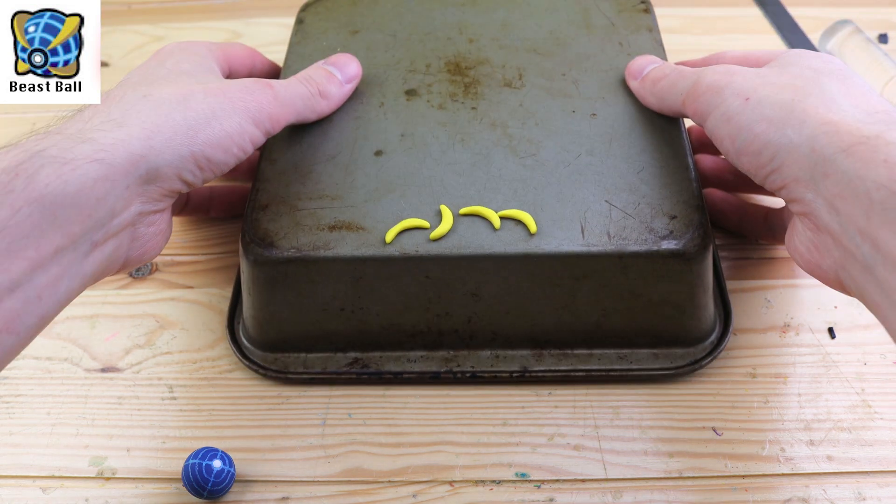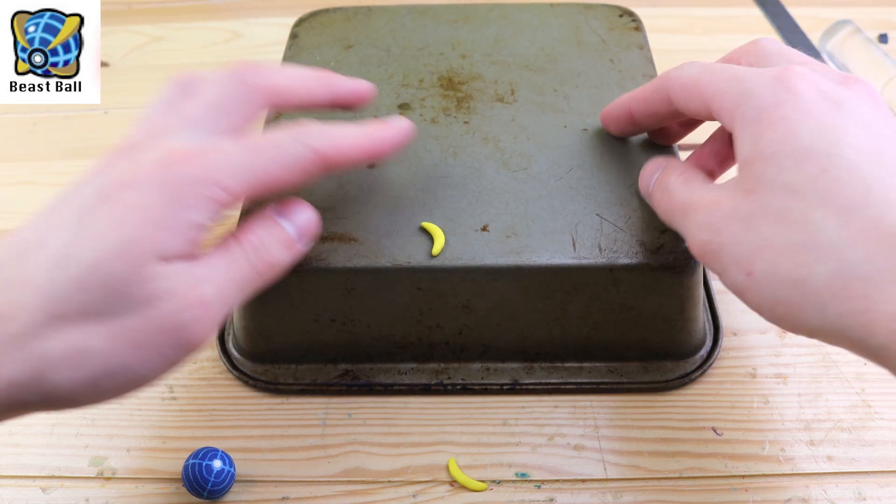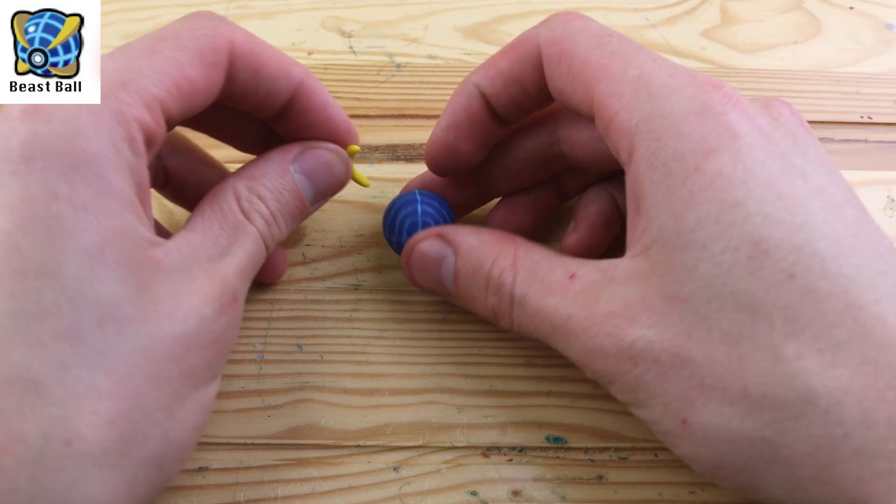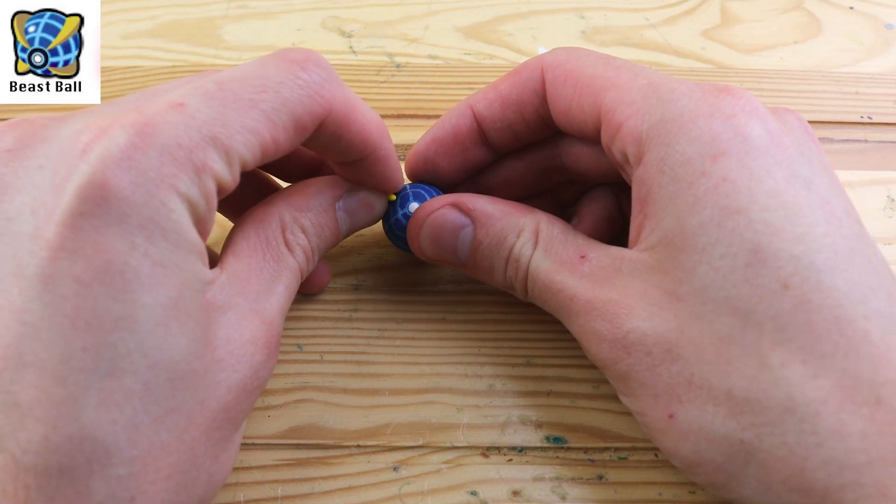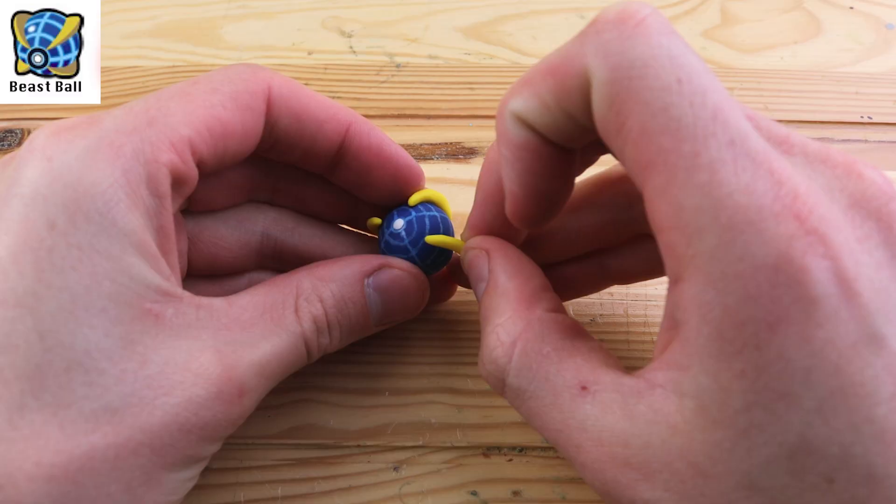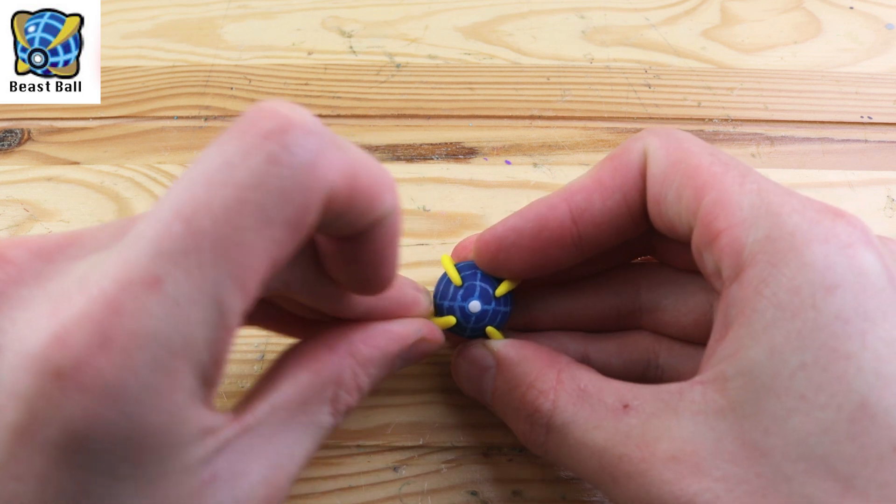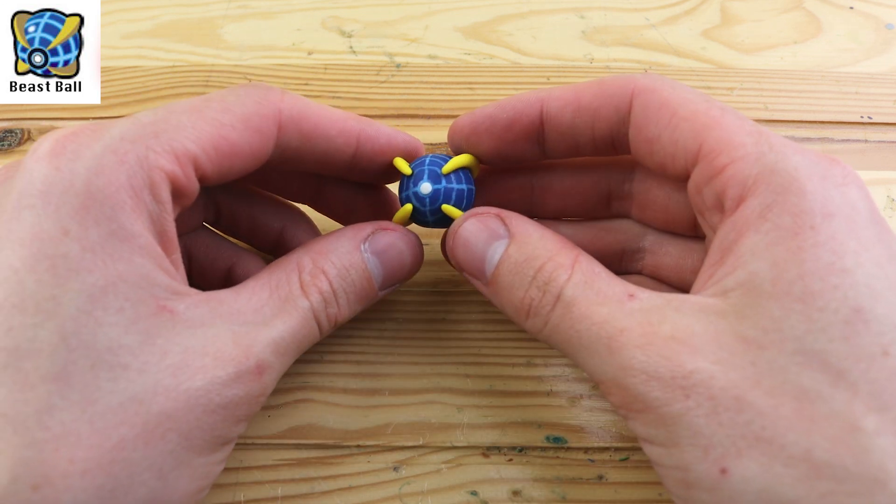I just baked these little bananas for 5 minutes since they're so small, they don't take much baking time to get hard. Let's use some super glue and attach these onto it. And I think after adding these on it looks a lot better and you don't really see the messy lines from the marker as much.